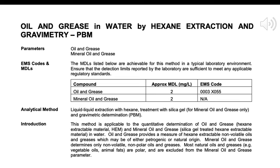Oil and grease provides a measure of hexane extractable non-volatile oils and greases, which may be of either petrogenic or natural origin. Mineral oil and grease determines only non-volatile, non-polar oils and greases. Most natural oils and greases — e.g., vegetable oils and animal fats — are polar, and are excluded from the mineral oil and grease parameter.